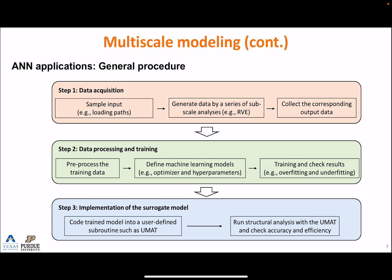In general, the ANN-accelerated modeling can be summarized in three major steps. First, obtain data — generate data from a series of subscale simulations. Then, train the model: some preprocessing needs to be done for the training data, and we need to tune the hyperparameters to get a better surrogate model. The third step is to implement the trained model into finite element software, usually through a user-defined subroutine.